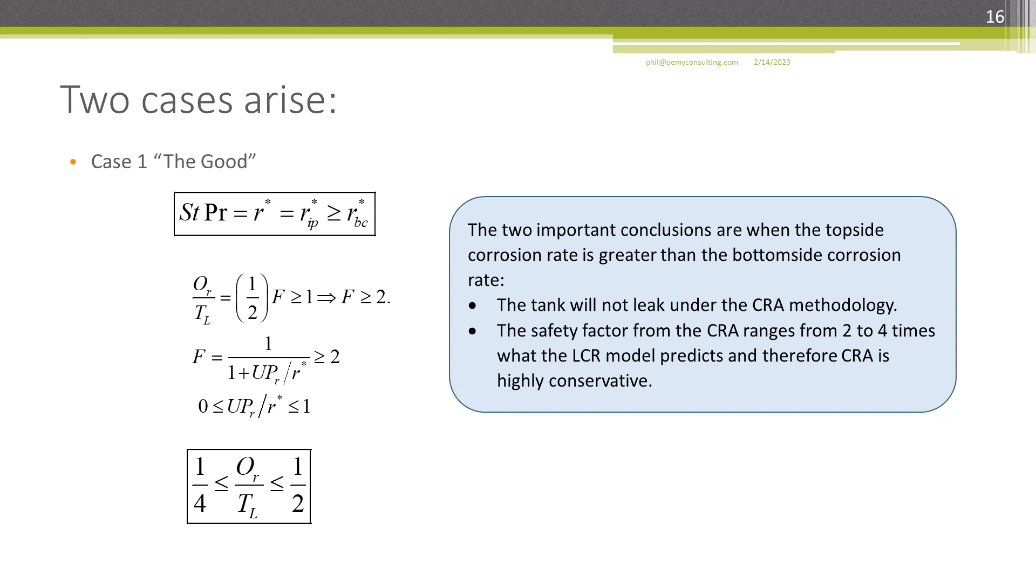It turns out that there are two cases. In case 1, which I call the good, the top side LCR is greater than the bottom side LCR. After doing the math, the ratio of OR to TL, or the failure ratio, is seen to be bounded between 1 fourth and 1 half. This means that failure is not possible under CRA. In fact, the conservatism of CRA over LCR is a factor of 2 to 4, which grossly overstates the longevity of the tank bottom corrosion life.